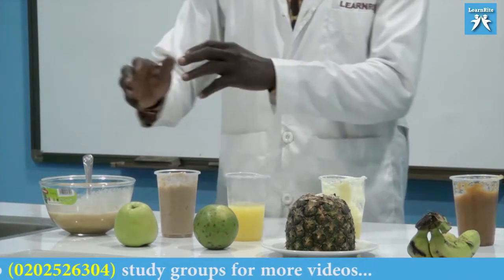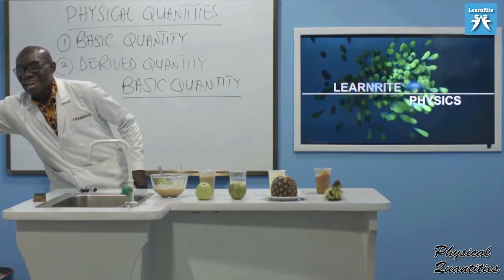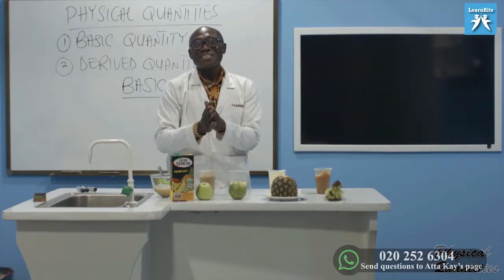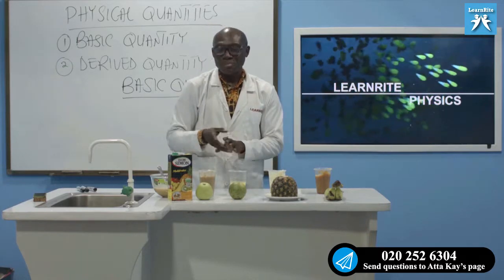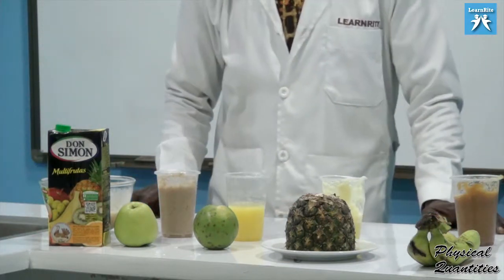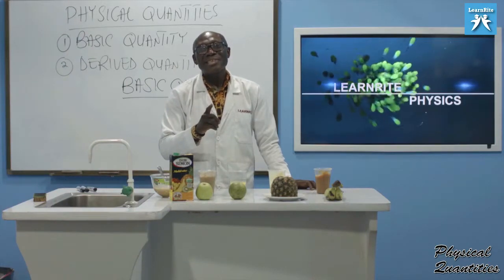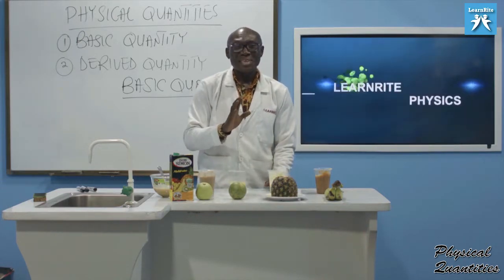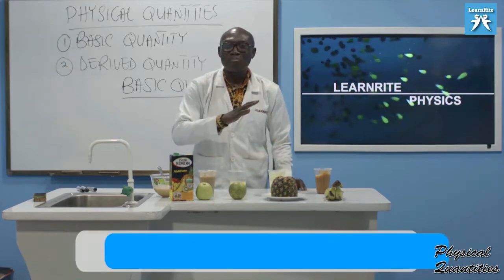This is what the big companies are doing — they will package this one into a small container and this is what we are sold. And guess what the name on it: multi-fruits — a lot of fruits put together. So this is a derived fruit while these ones are basic fruits. With this understanding, you will appreciate that a basic quantity is a quantity which does not consist of any other quantity apart from that quantity alone, and a derived quantity is a quantity which consists of two or more of the basic quantities.